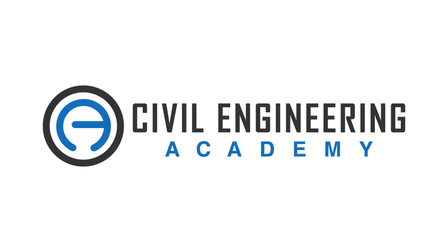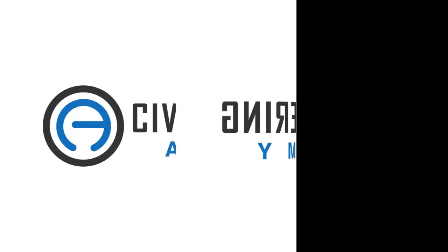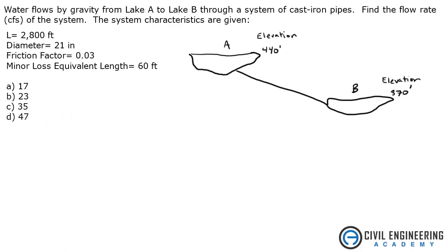Welcome to Civil Engineering Academy. Today we are solving a problem from water resources. The problem states water flows by gravity from Lake A to Lake B through a system of cast iron pipes. Find the flow rate in CFS of the system.